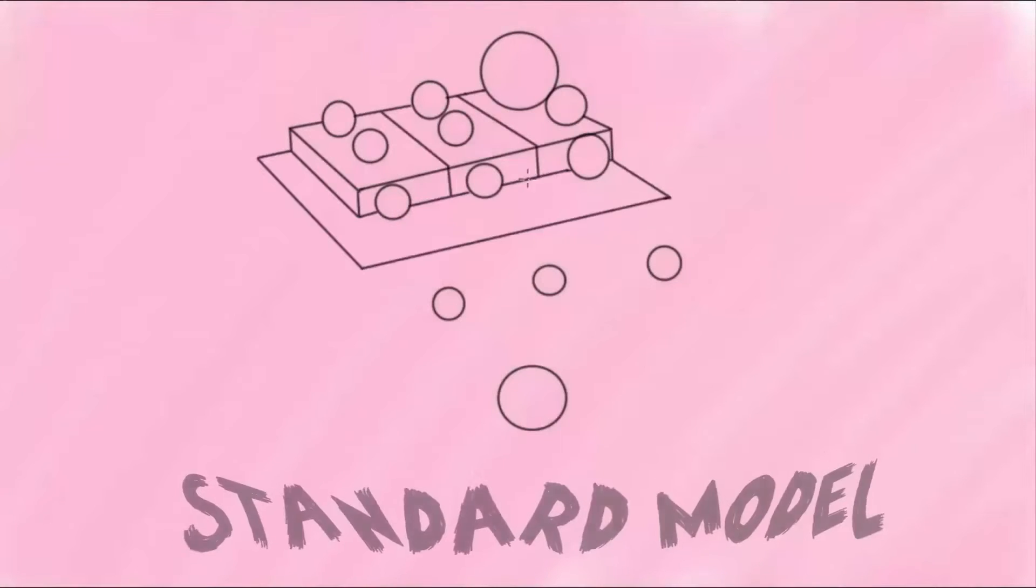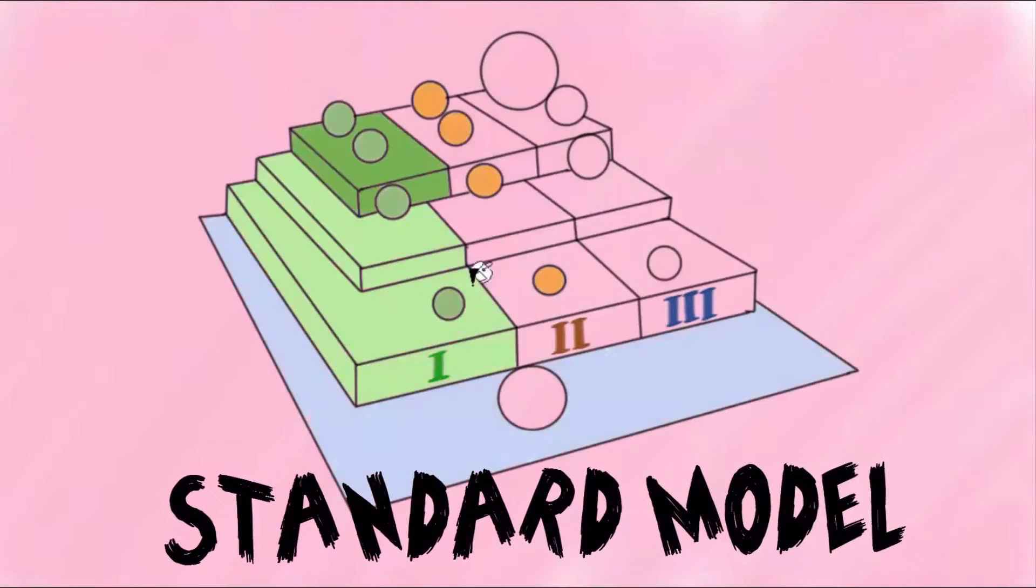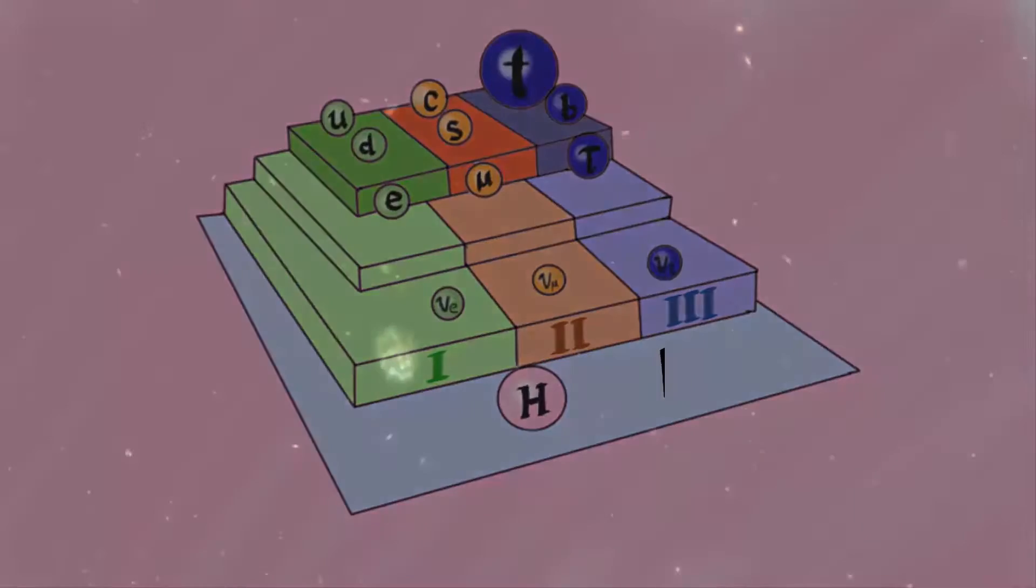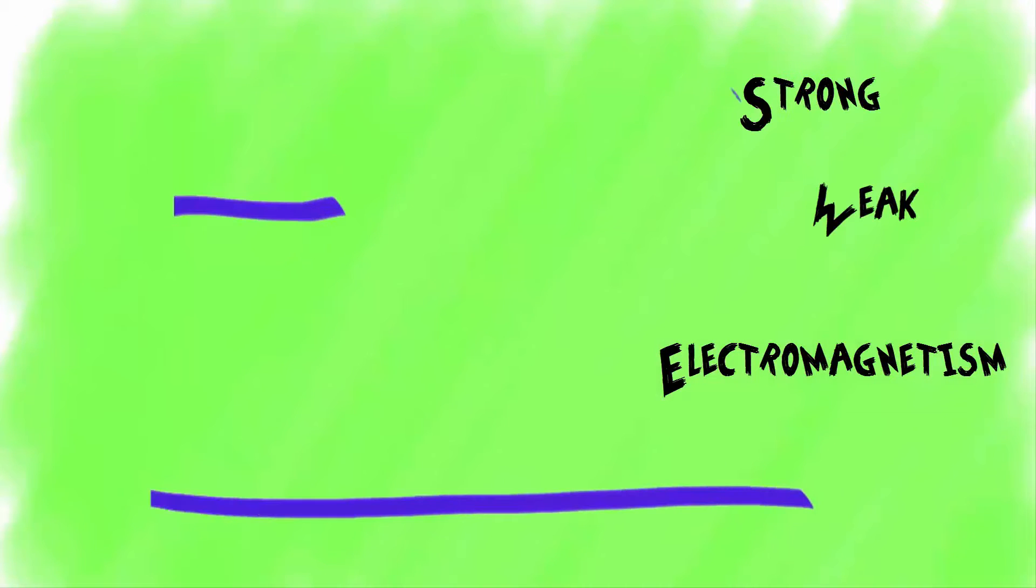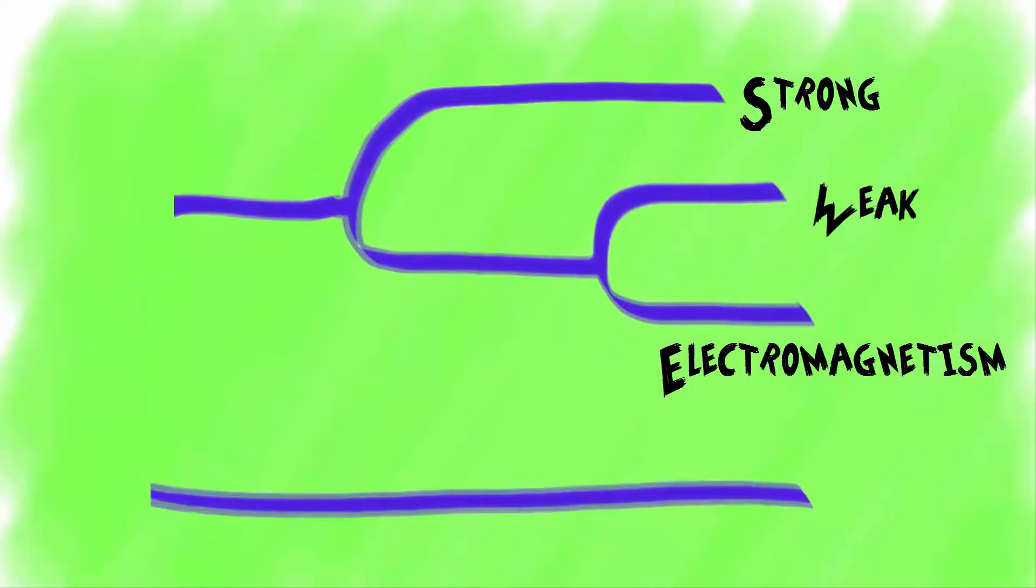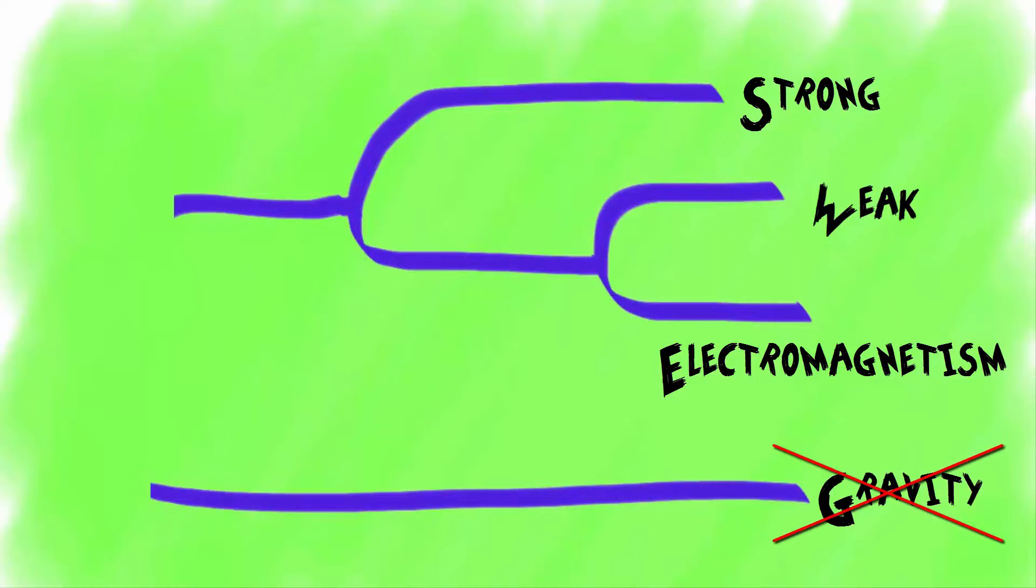Scientists found the Standard Model after decades of hard work. It is highly successful in providing experimental predictions. Electromagnetism and the strong and weak nuclear forces have been explained by this model. But there's still a problem. Gravity does not fit into the equation.